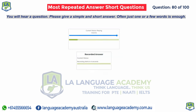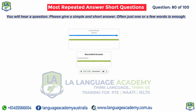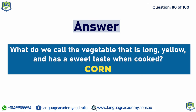What do we call the vegetable that is long, yellow, and has a sweet taste when cooked? Corn.